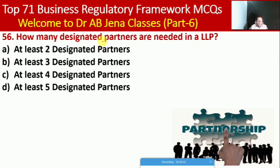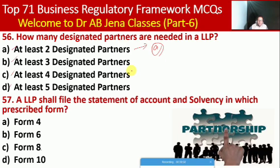Next MCQ: how many designated partners are needed in an LLP? Whether at least 2, at least 3, at least 4, or at least 5. Here A is the right option — minimum two designated partners. Next MCQ: an LLP files the statement of accounts and solvency in which form? Whether Form 4, 6, 8, or 10. Here C is the right option — Form 8.